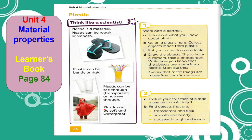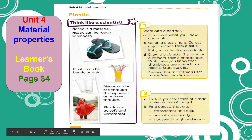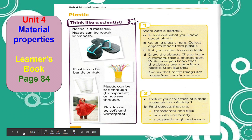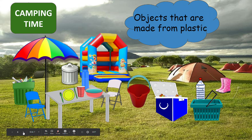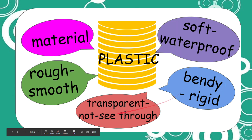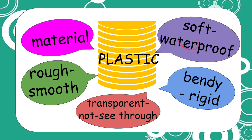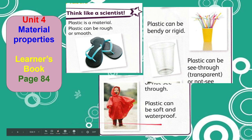Plastic can be soft and waterproof, just like this raincoat. Plastic has properties that make it suitable for making different objects. It can be strong, shiny or dull, bendy — meaning flexible — or rigid. It is hard and does not feel cold to touch. Unlike metal, which feels cold to touch, plastic does not feel cold to touch.